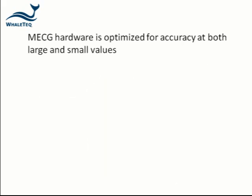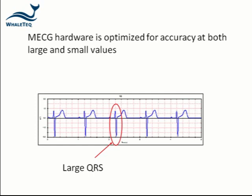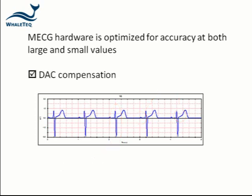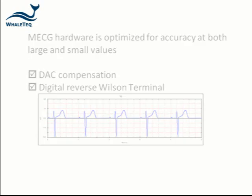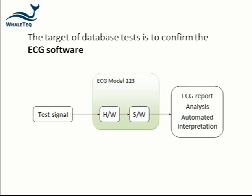The MECG hardware has been optimised to provide high accuracy for both large and small values. This is necessary as some waveforms have a large peak amplitude but contain important low-level values such as voltages in the ST segment. DAC compensation and a digital reverse Wilson terminal for V1 to V6 have been used to achieve this goal. Generally, the target of a database test is to confirm the accuracy of analysis in the ECG software.